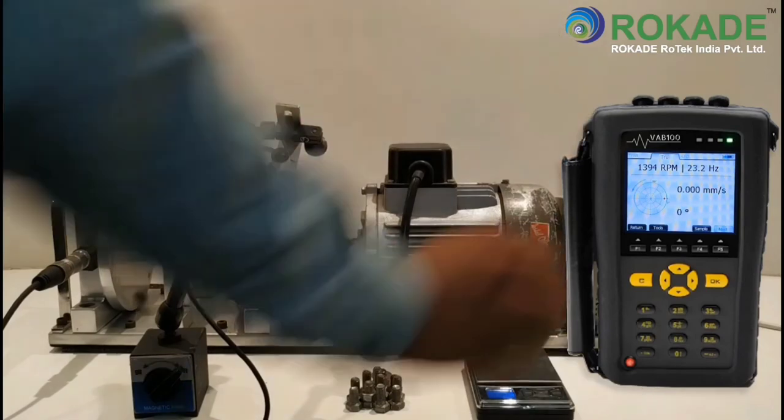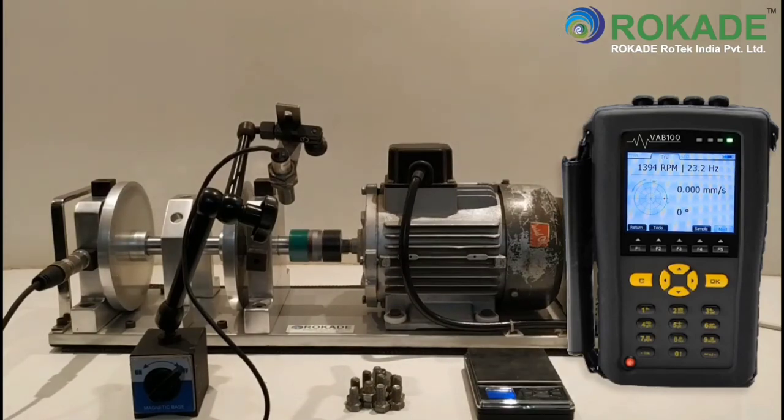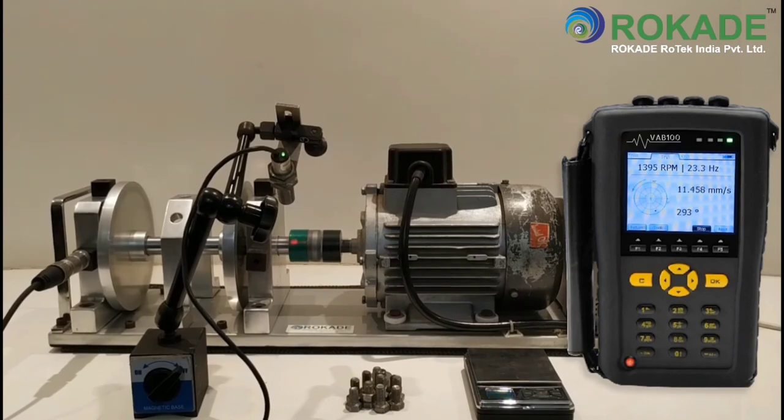Now start the machine. Then click on sample to record the trial run reading. You can see the vibration reading has now changed. Click on stop to record the data.